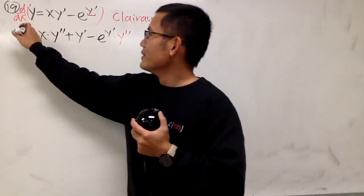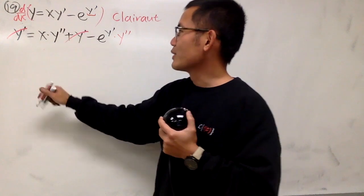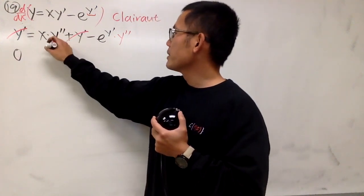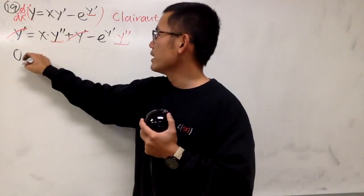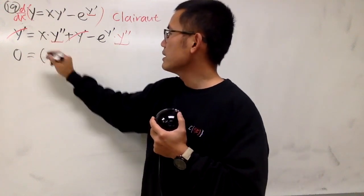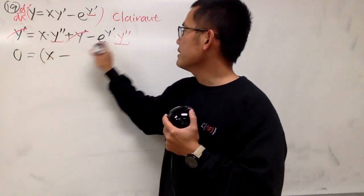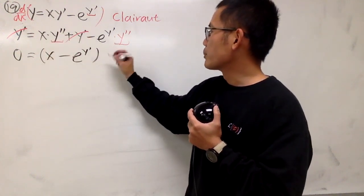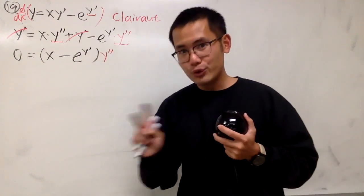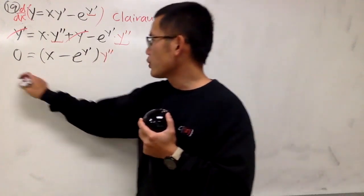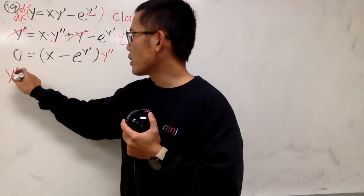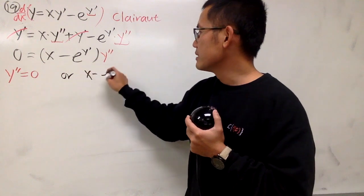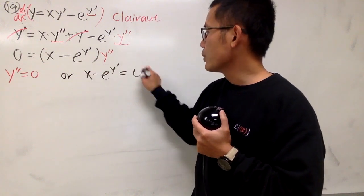Now, you see that this and that cancel nicely, so you have a zero. Good. And then we have y double prime here, y double prime here. So we can look at this as, parentheses, x minus e to the y prime, and then we have the y double prime right here. Now, two choices. First choice is when we have y double prime is equal to zero, or the second choice is when we have x minus e y prime is equal to zero.